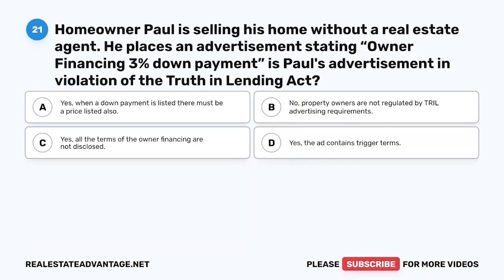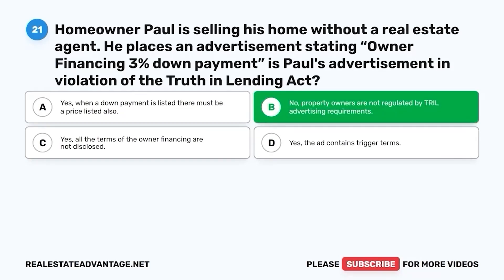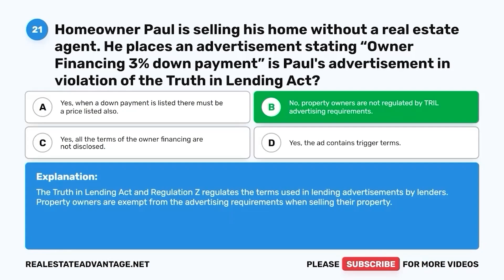Question 21. Homeowner Paul is selling his home without a real estate agent. He places an advertisement stating, 'Owner financing — 3% down payment.' Is Paul's advertisement in violation of the Truth in Lending Act? A. Yes, when a down payment is listed, there must be a price listed also. B. No, property owners are not regulated by TILA advertising requirements. C. Yes, all the terms of the owner financing are not disclosed. D. Yes, the ad contains trigger terms. The correct answer is B. Property owners are exempt from the Truth in Lending Act and Regulation Z advertising requirements when selling their property.